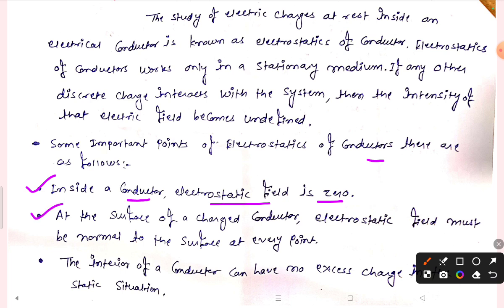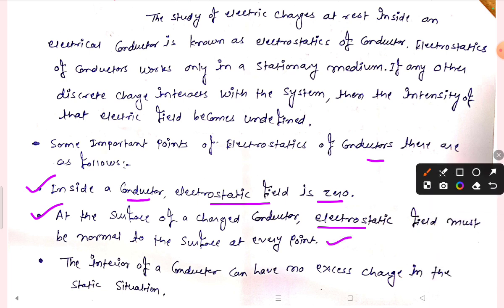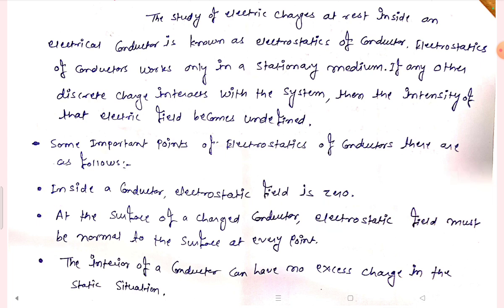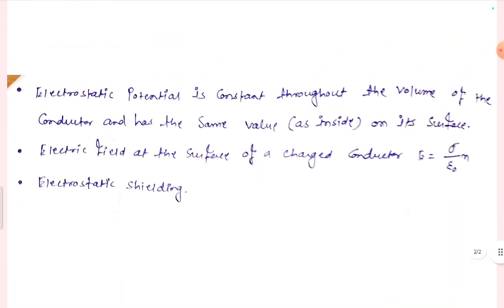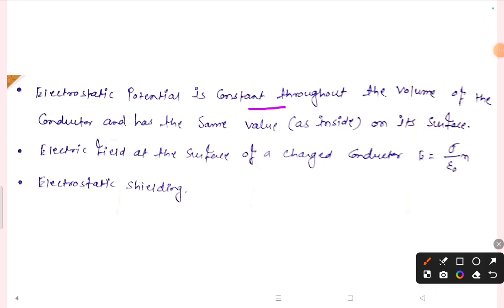Second: at the surface of a charged conductor, the electrostatic field must be normal to the surface at every point. The interior of a conductor can have no excess charge in the static situation. The electrostatic potential is constant throughout the volume of the conductor and has the same value as inside on its surface. The electric field at the surface of a charged conductor is E equal to sigma upon epsilon into N.